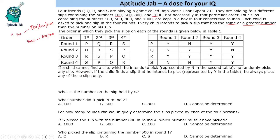If a child cannot find a slip they intend to pick, that is represented by N in the second table. This table shows whether a child is able to pick the slip of their desire or not. If they don't find it, they randomly pick any slip. However, if the child finds a slip they intend to pick — marked as Y — they always pick one of those slips only. So if someone has 500, they can pick 500, 800, or 1000.